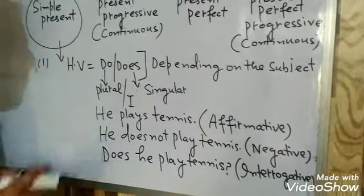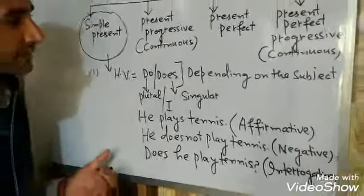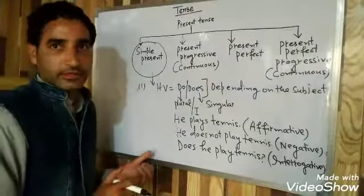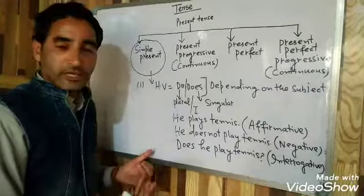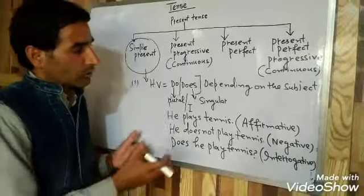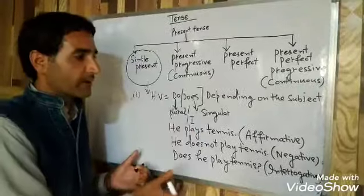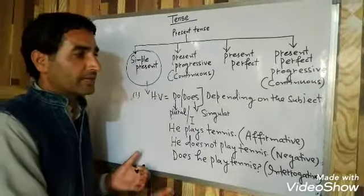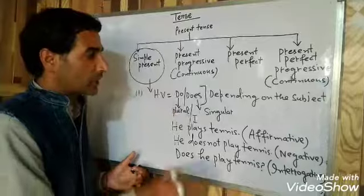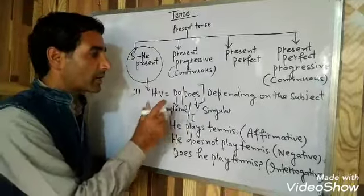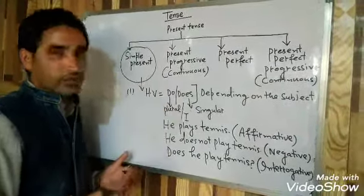Likewise, you can frame different sentences using different subjects. You can use I, we, you, and other subjects to frame affirmative, negative, and interrogative sentences. You only have to remember: 'do' is used with plural and 'does' is used with singular.